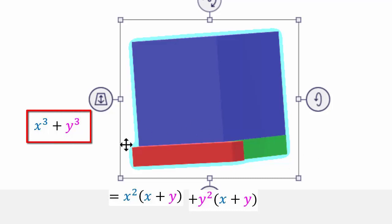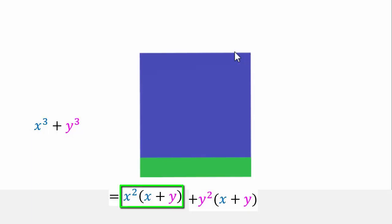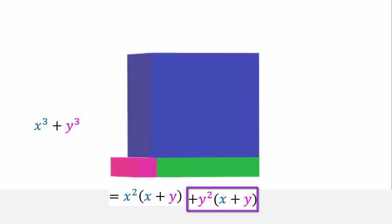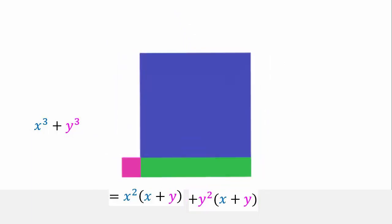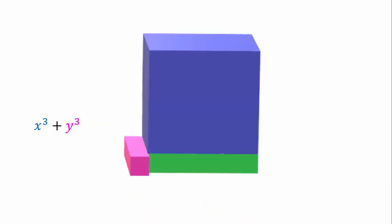But we only want x³ + y³, so we need to take that bottom slice out. Let's review: we have our cube, then we built the green portion under it giving a rectangular prism x × x × (x + y). Then we added a piece to the side: y × y = y², made long enough so the length is x + y, so we added a piece (x + y) × y².